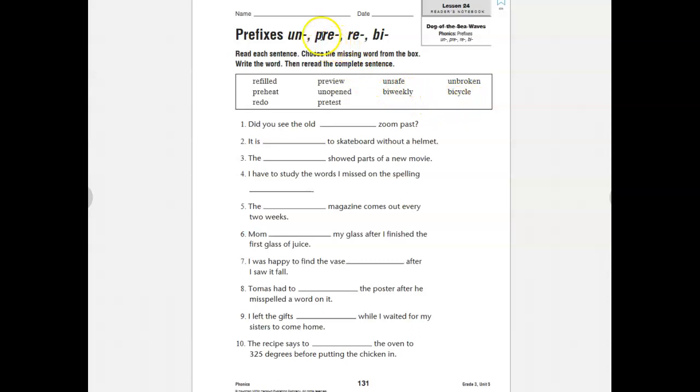Our next one is pre. The prefix pre means before, which makes sense since prefixes come before the root word. So when we see the word preheat, it means heating before you cook, like an example of that would be your oven when you preheat it. Preview would mean you view it before.